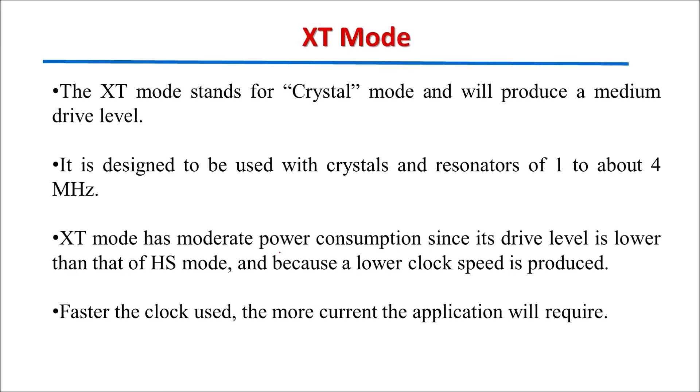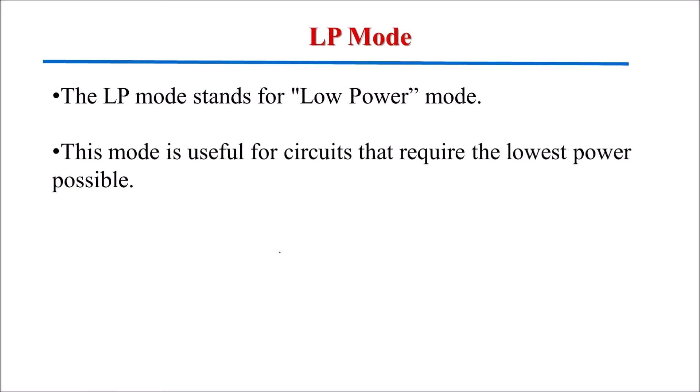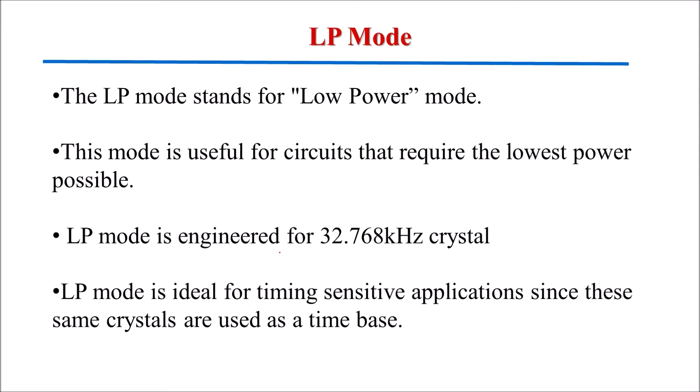The XT mode has moderate power consumption since its drive level is lower than that of HS mode and because of lower clock speed. The faster the clock used, the more current the application will require. The lowest power mode is LP mode, which stands for low power mode. This mode is useful for circuits that require the lowest power possible. It gives a frequency up to 32.768 kilohertz, generating a lower frequency. It is ideal for timing-sensitive applications since the same crystals are used as a time base. The external crystal is connected between oscillator 1 and oscillator 2 terminals.